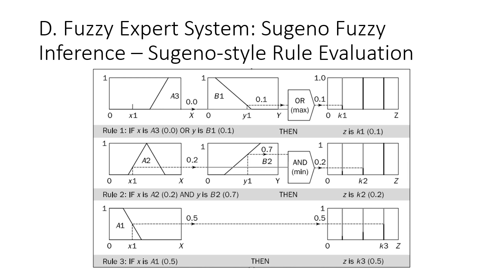Using the same example as in Mamdani fuzzy inference — assessing the risk of a project given values of funding and staffing — if you look at rule one, the rule is the same but the result is now a constant. In rule one, if x is A3 or y is B1, because this is an OR operation, we take the maximum value, which is 0.1.